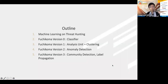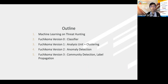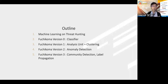Now, coming back to today's talk. My outline is as follows: I will first introduce machine learning and threat hunting, then introduce each version of our system from version zero to version three. The most important thing is that we want to give a step-by-step approach, our thought process, and show how we gradually improved our system's performance. We'll also cover the tools, methods, and architecture used, and provide evaluation results at the end.